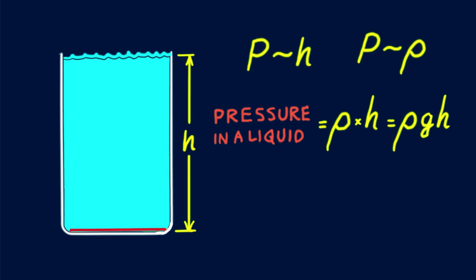At twice a given depth, water pressure is twice as much. At three times the depth, water pressure is three times as much, and so forth.